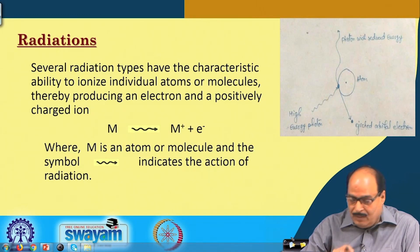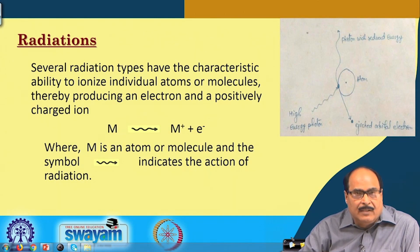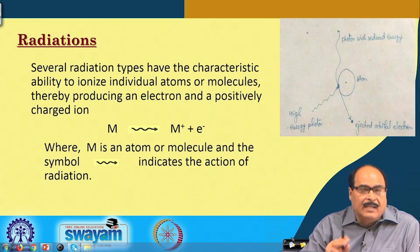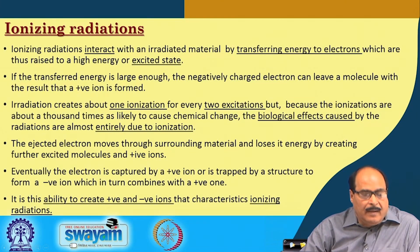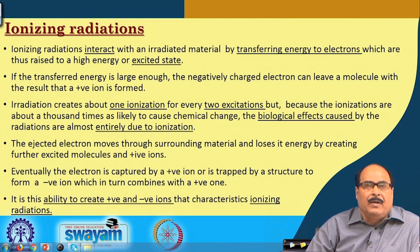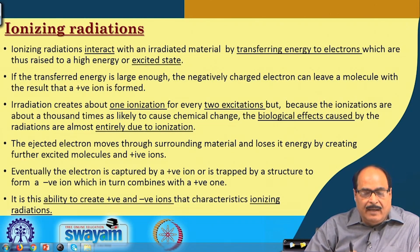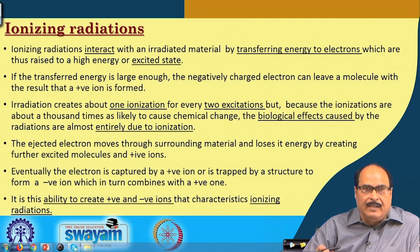The Compton effect shows that when an atom is bombarded by radiation, a positively charged ion and a negatively charged ion are produced. This is the characteristic ability of ionizing radiations — such radiations which interact with a material and produce ions, whether positive or negative, are called ionizing radiations.